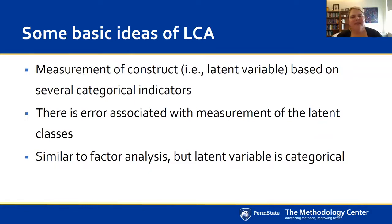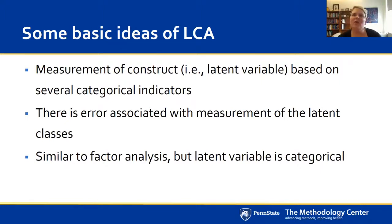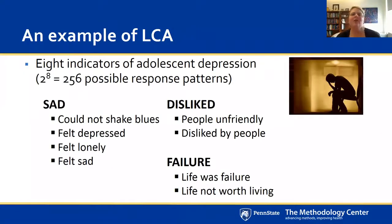Because we're interested in measurement error, just as in factor analysis, we base the measurement of our latent construct on several categorical indicators. In factor analysis, we're talking about a continuous underlying latent factor typically measured with continuous items. In LCA, we're talking about a categorical latent variable typically measured with categorical indicators. LCA is fundamentally a measurement model — it's similar to factor analysis, but the latent variable is categorical rather than continuous.